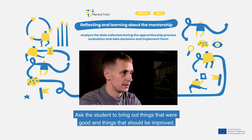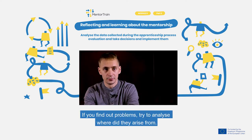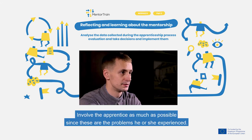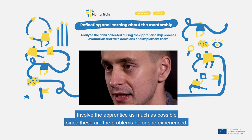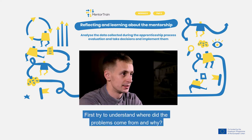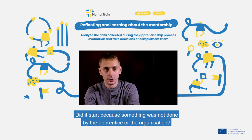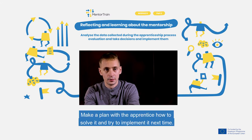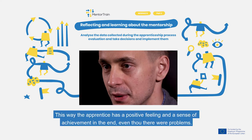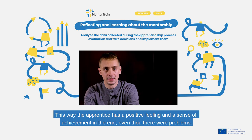Ask the student to bring out things that were good and things that should be improved. If you find problems, try to analyze where they arose from. Involve the apprentice as much as possible, since these are the problems that he or she experienced. Try to understand where the problems came from and why — whether they started because of something not done by the apprentice or by the organization. Make a plan with the apprentice on how to solve it and try to implement it the next time, so the apprentice has a positive feeling and sense of achievement in the end, even though there were problems.